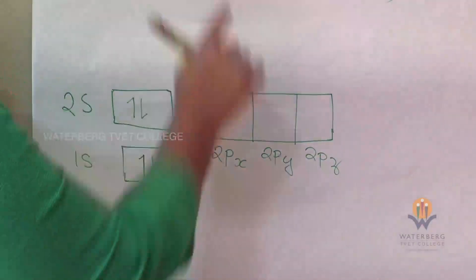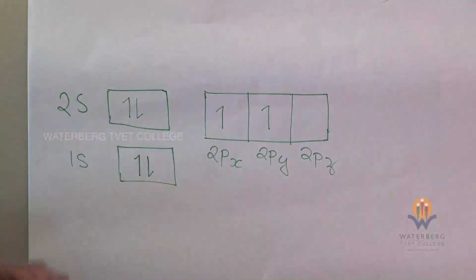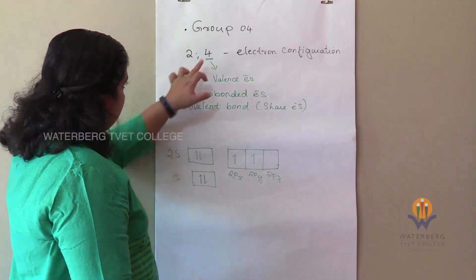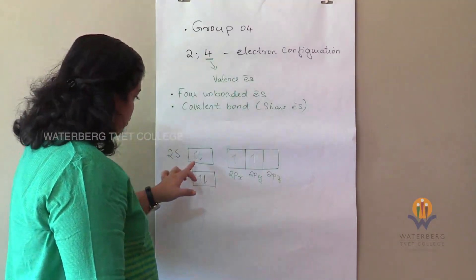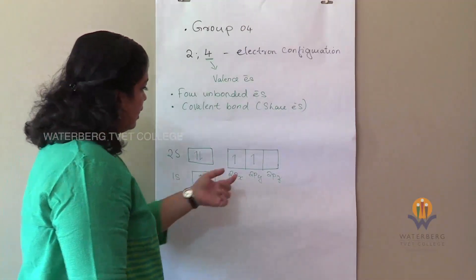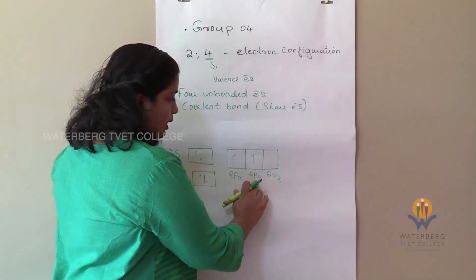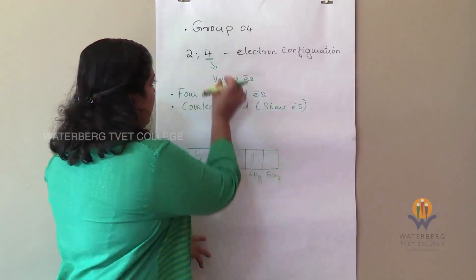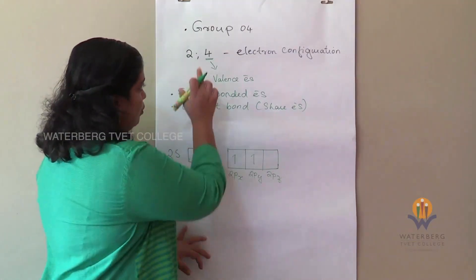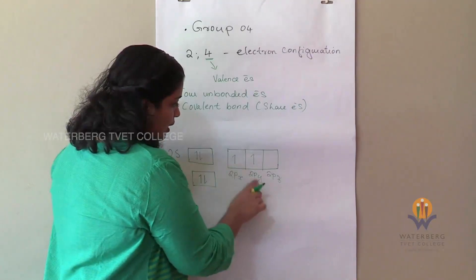We have 2 more electrons to place. Looking at our 2s orbital, we have 4 electrons to fill in the second shell. We fill 2 in the s orbital — that is the maximum it can take. Then we go to the p orbitals divided into 2px, 2py, and 2pz. We are left with 2 more to make the total 6, so we fill in 2px with 1 electron and 2py with 1 electron.